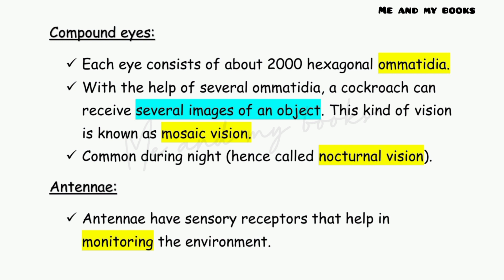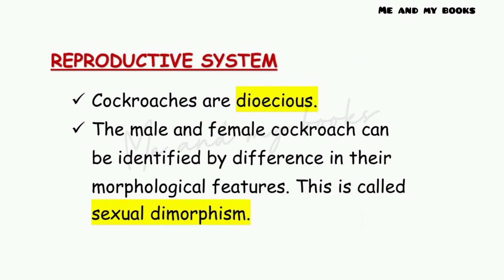The sense organ antenna has sensory receptors that help in monitoring the environment. The next organ system is the reproductive system.